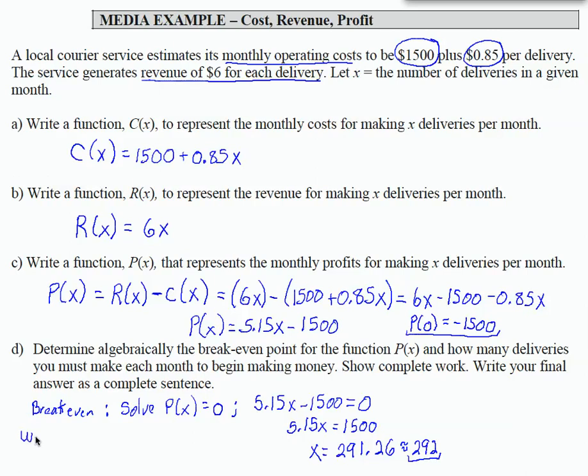So let's see if we can make some sense out of this result and write up a final result. Let's say then that we would need to make 292 deliveries each month to break even. And there you have it.